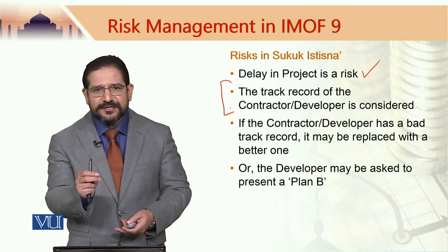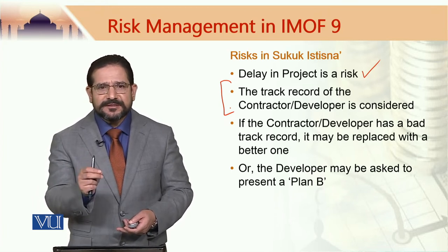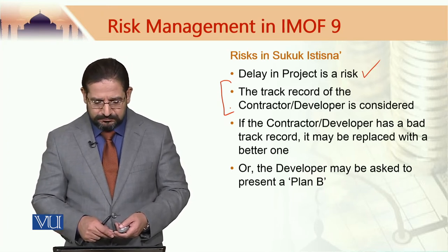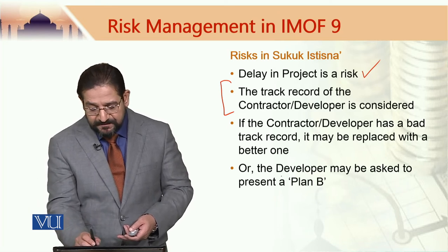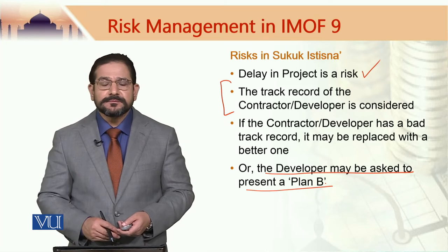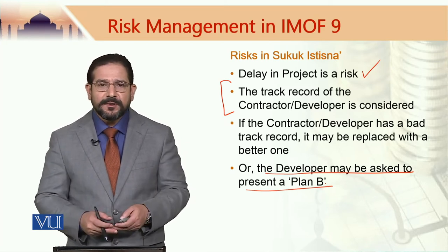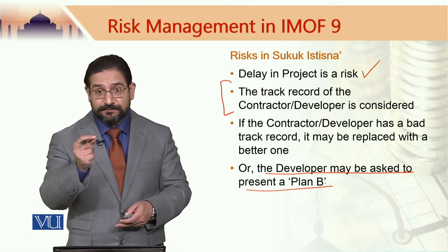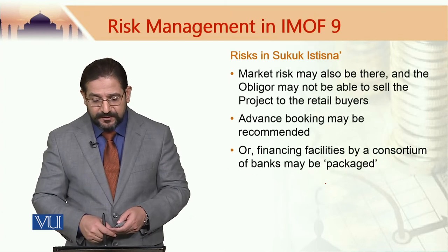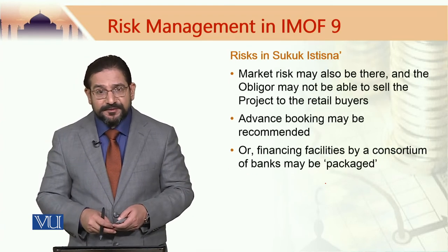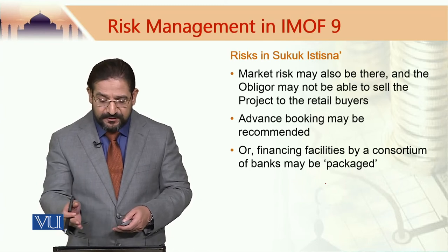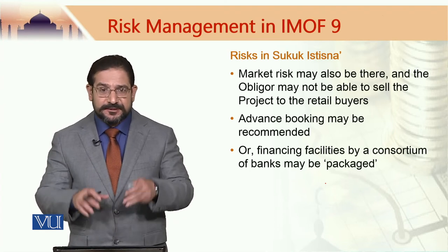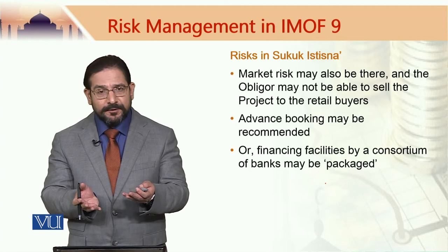If the contractor or developer has a bad reputation, this should be changed, or the developer may be asked to present a plan B — what other solution do you have for us to receive the project on time? Market risk may also be there, and the obligor may not be able to sell the project to the retail buyer, which is part of the Sukuk structure.